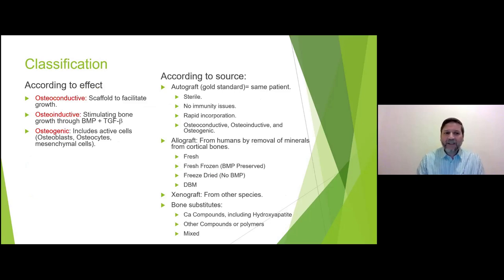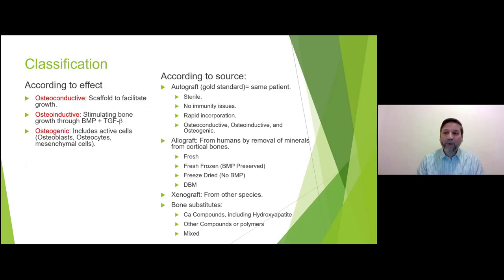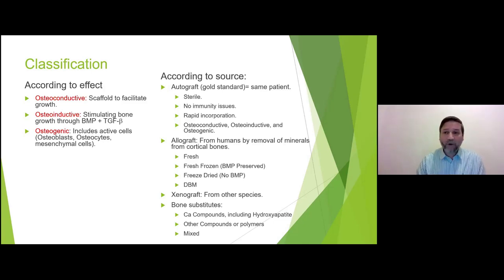Osteoconductive means it has a three-dimensional shape allowing bone to grow into it. Osteoinductive means it has the proteins that allow the bone to grow. Osteogenic means it contains cells that allow the bone to grow. A material can be one or all of these three. According to the source, we have autograft, allograft, xenograft, and artificial bone substitute materials.